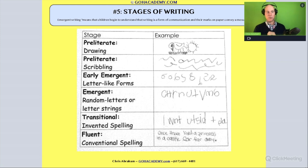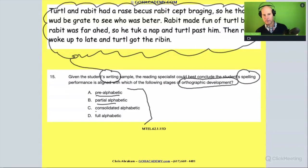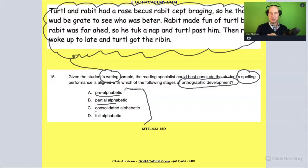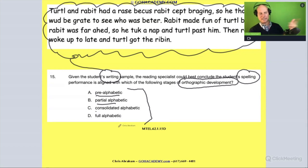We went through these stages of writing: pre-literate, early emergent, emergent, transitional, fluent. So I'll match them up. Going back to this question, pre-alphabetic is pre-literate. Partial alphabetic would be emergent. Fully alphabetic would be partially fluent, and consolidated alphabetic would be like fluent writing — or approaching that. So that's kind of the lineup.